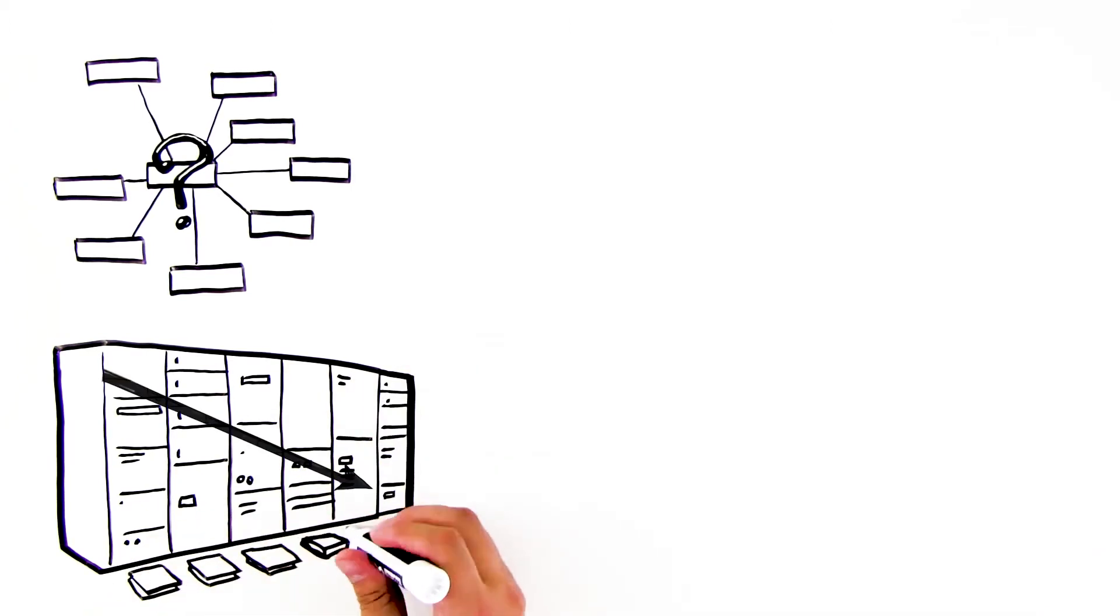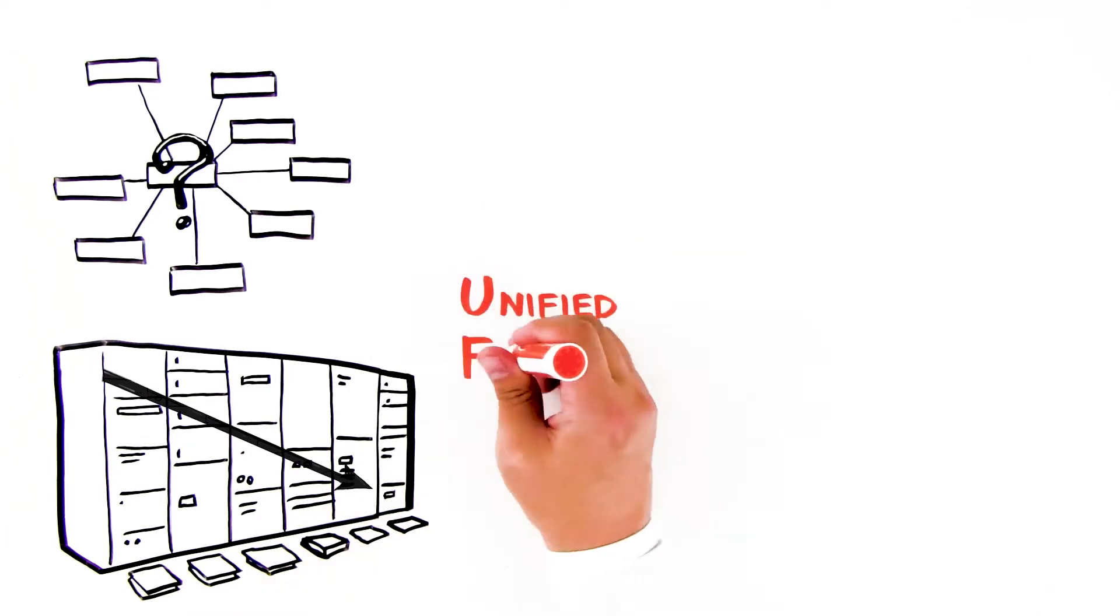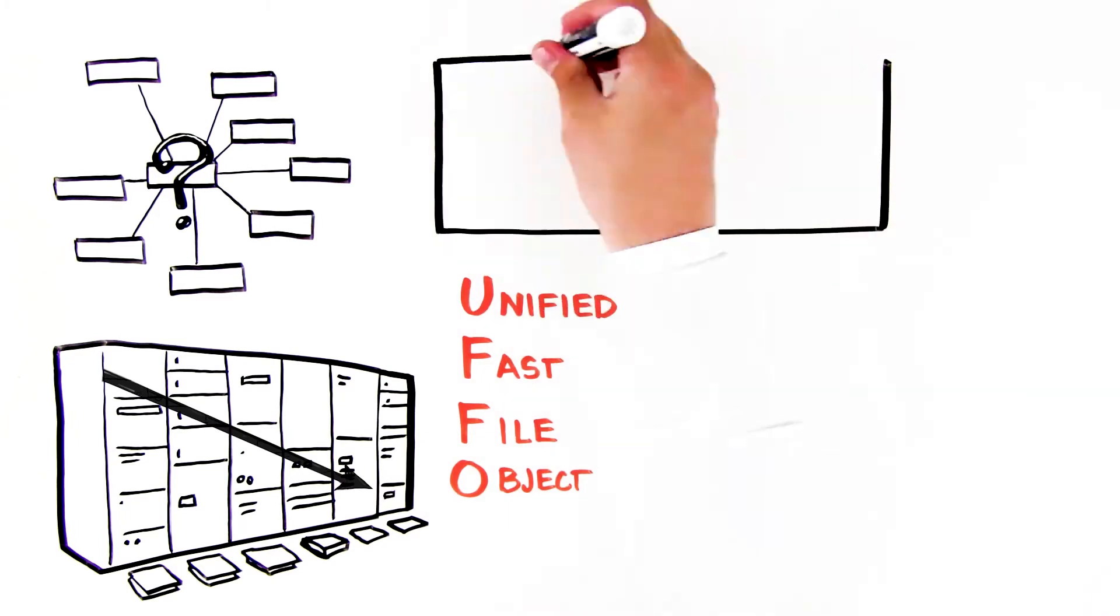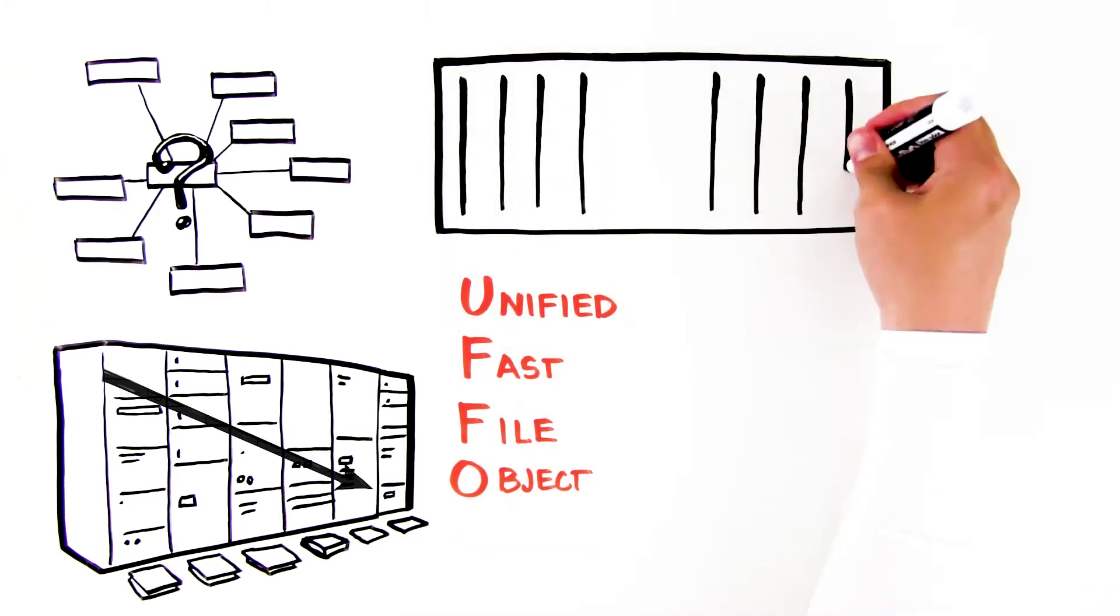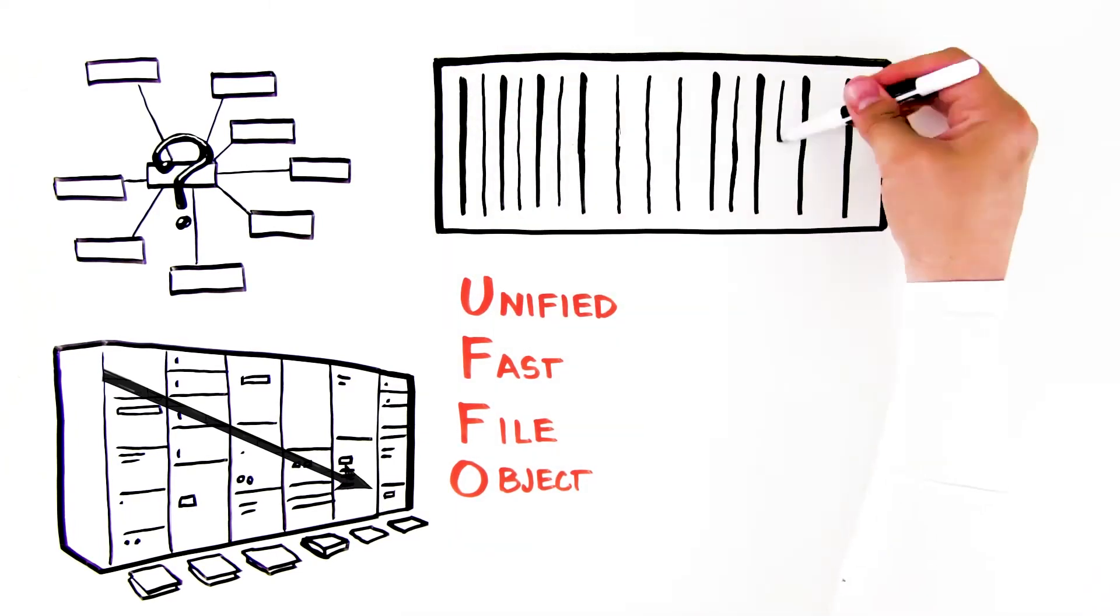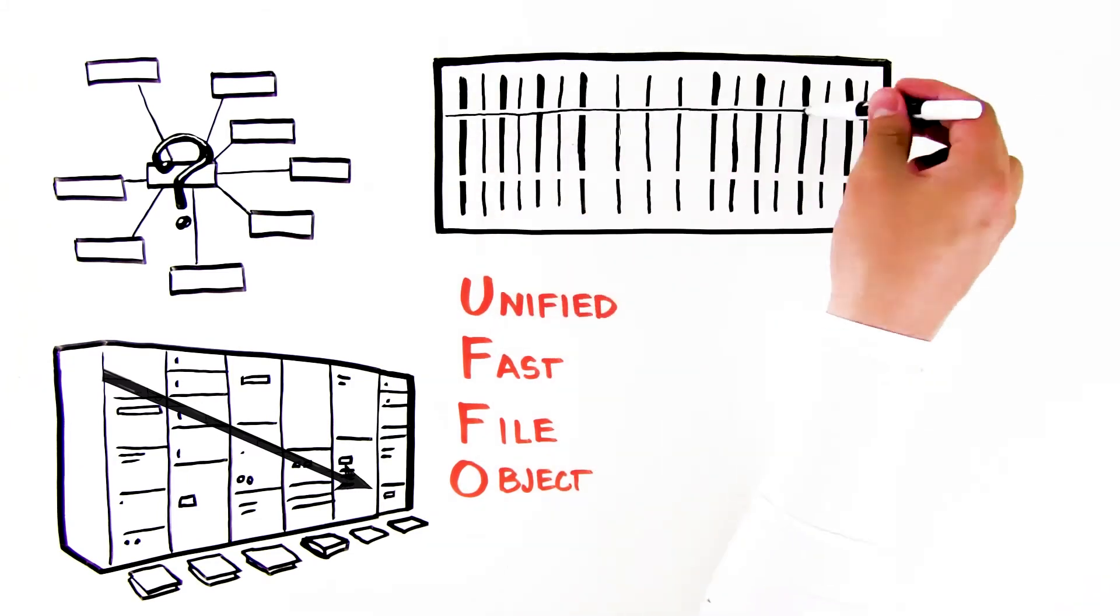Simple. FlashBlade—the first unified fast file and object platform, or UFFO. A storage system designed to consolidate and address the needs of modern unstructured data, delivering fast file and fast object on a single platform.